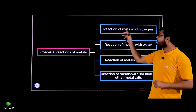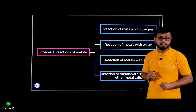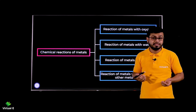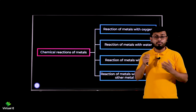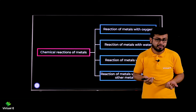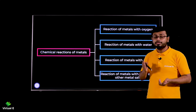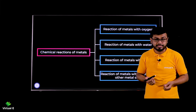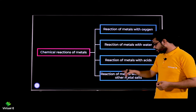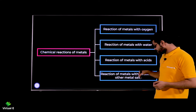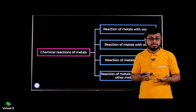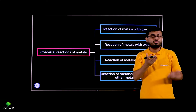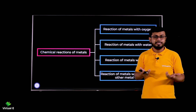First of all, the reaction of metals with oxygen. What will react with the oxygen, and which product do we get? Second, if you mix with water, what will you get? Third, how metals react with acid. And finally, the last reaction — metals with the solution of other metal salts. You have one metal and the other metal has one salt — what will happen when they react?